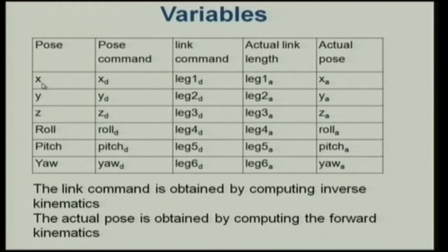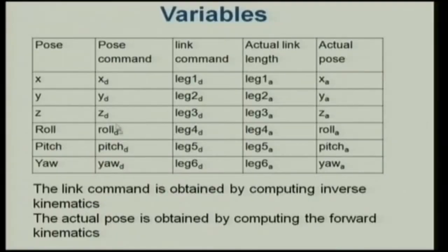Looking at the general parameters x, y, z, roll, pitch, and yaw: I give a position command — the desired x, xd; similarly y desired and z desired; and there is also a desired roll, pitch, and yaw value. That is my wish list. I do inverse kinematics and compute what the desired leg lengths should be.